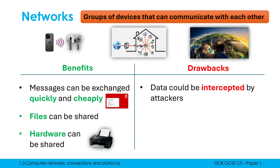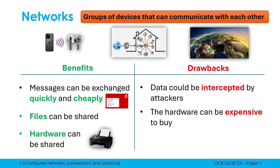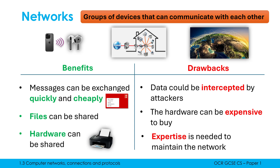However, once you connect to a network you are immediately at risk of certain cyber attacks. We'll look at these in the next topic, but for example, data could be intercepted by an attacker. The data being sent over wires or through the air is available for an attacker to intercept and potentially use for malicious purposes. Buying the hardware — which we'll look at in a future video — can be expensive, and there is a degree of expertise needed to maintain the network, especially the bigger ones in schools and offices, which are quite complicated.